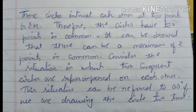It can be observed that there can be a maximum of two points in common. In this way, there are two points in common. Consider the situation in which two congruent circles are superimposed. We have a situation in which two circles are superimposed — that situation can be viewed as if we are drawing this circle two times.